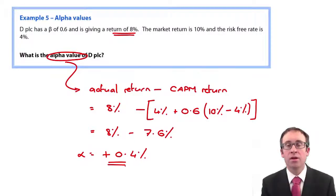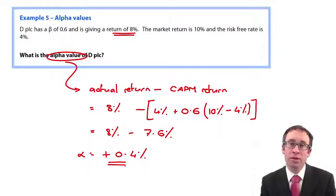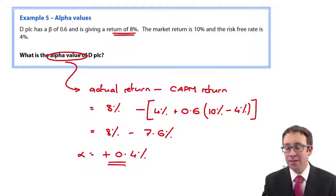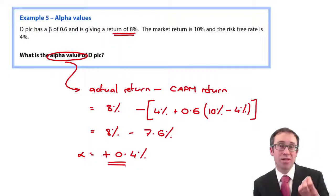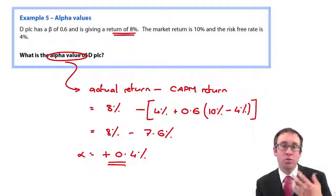And if it's positive, we're going to buy that share, because what we actually get is higher than what we predict we should get theoretically. If it was negative, so let's just say the actual return stays at 8 percent and the CAPM return moved up to 9.